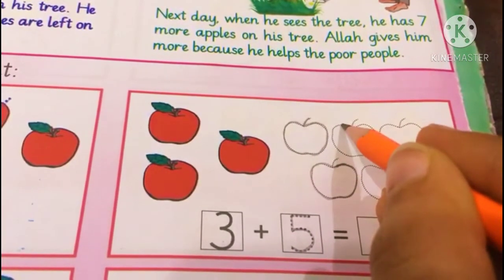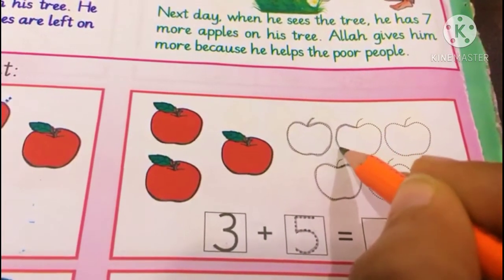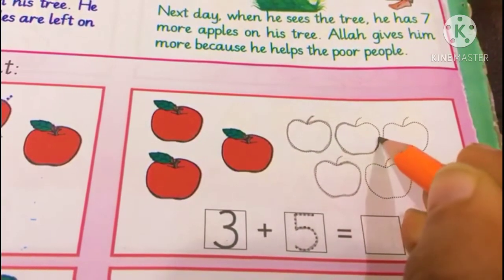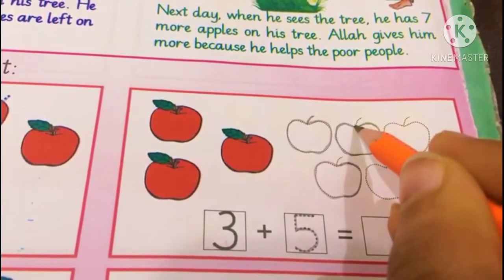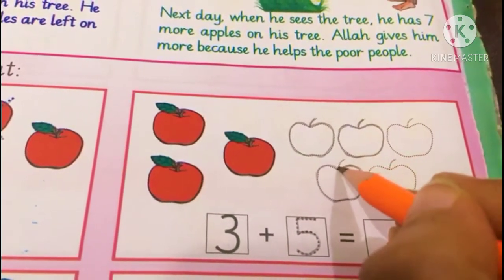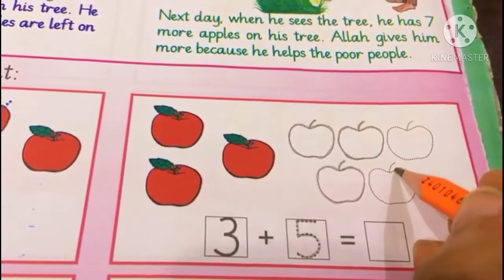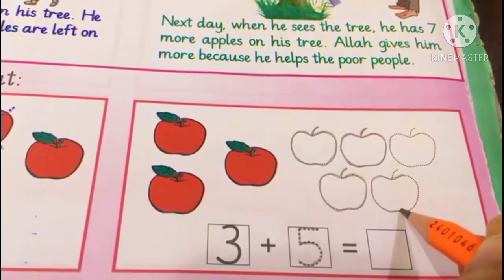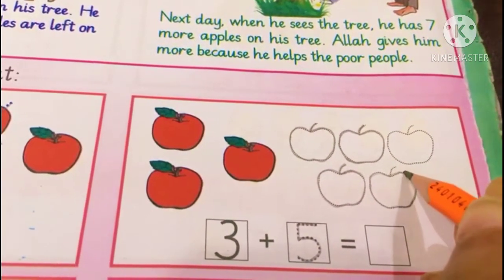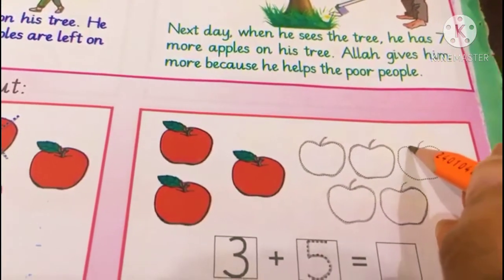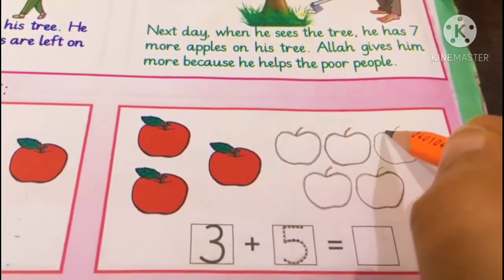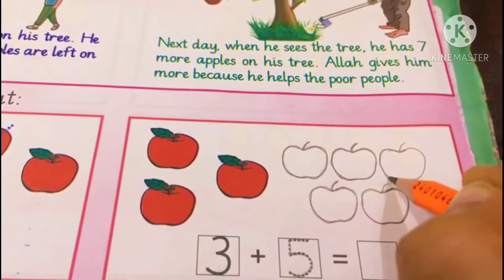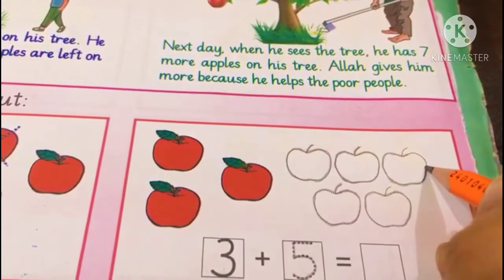Okay. 3. We are going to trace 3rd apple. Yes. 3. And then we will draw 2 more apples. 4 and 5. Draw apple. Fourth one. And then 5. We are adding 5 more apples in 3 apples. Then we will count them.